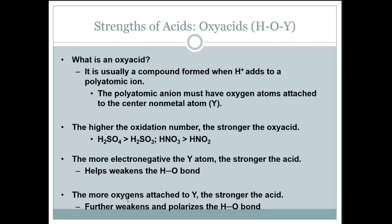So let's talk about the strength of oxy acids. What is an oxy acid? It is usually a compound formed when a hydrogen adds to a polyatomic ion. The polyatomic anion must have oxygen atoms attached to a central nonmetal atom. So, for instance, SO4, SO3, NO3, NO2.